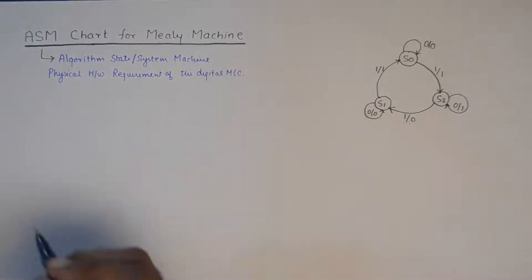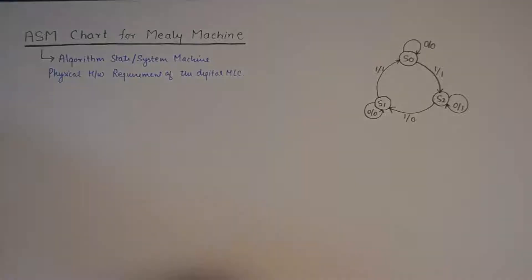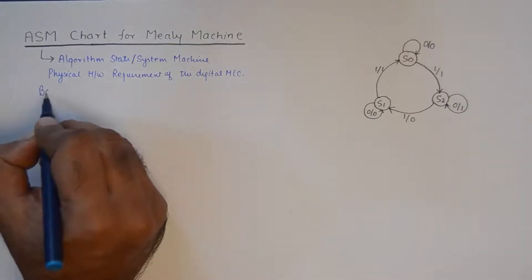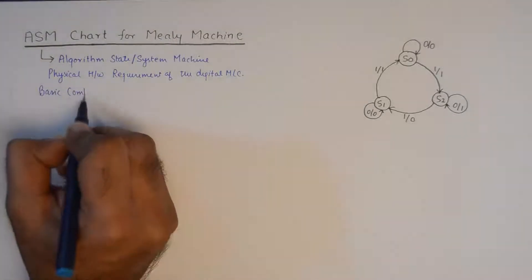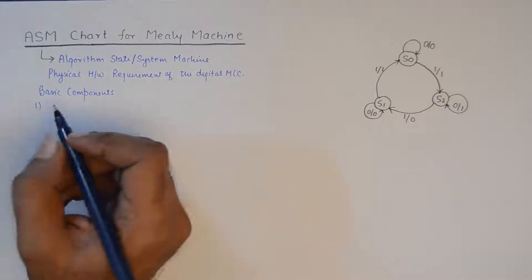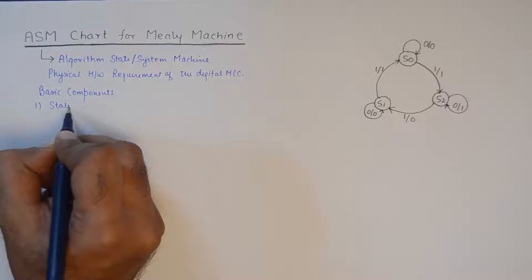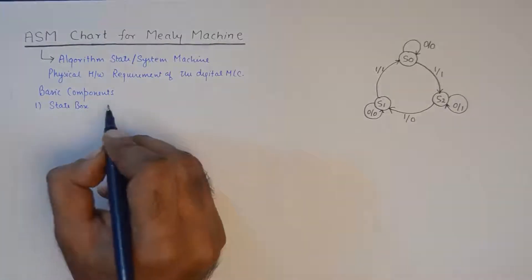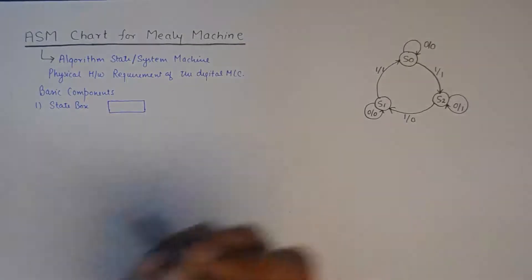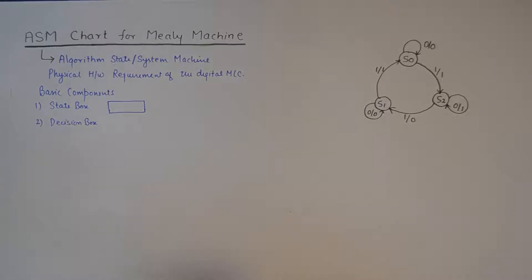Before we start to make the ASM chart or ASM diagram or ASM algorithm, we need to see the basic requirements for drawing it. You need three basic components to draw an ASM chart. The first thing you would need is the state box, and symbolically it is represented using a rectangular box.